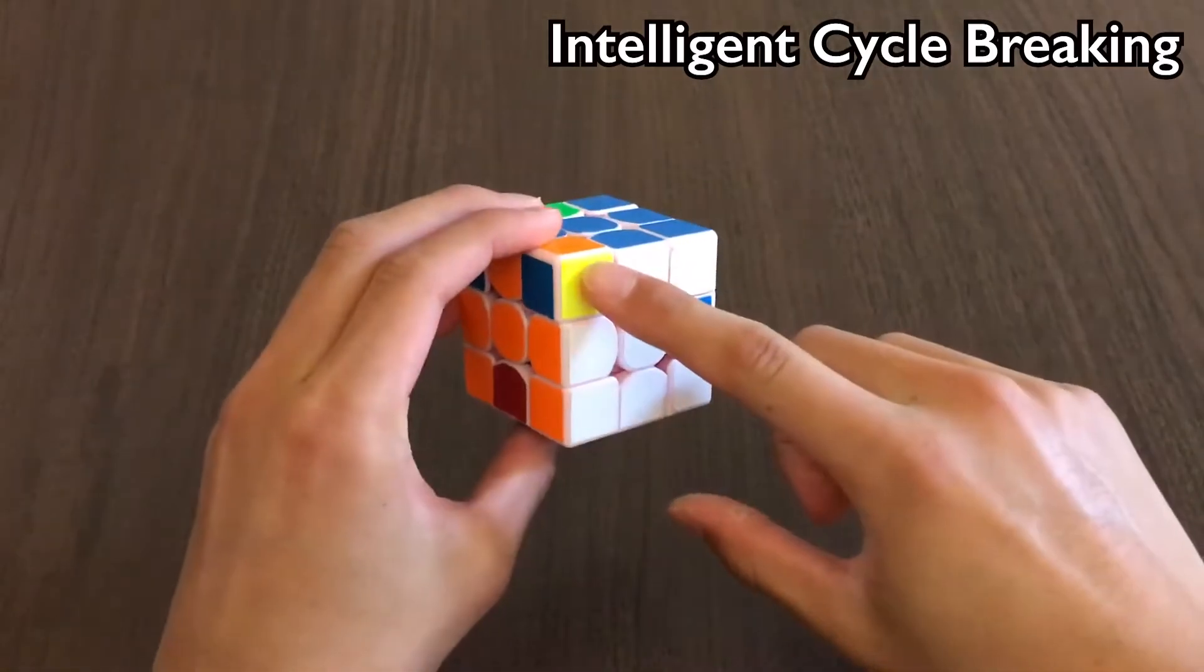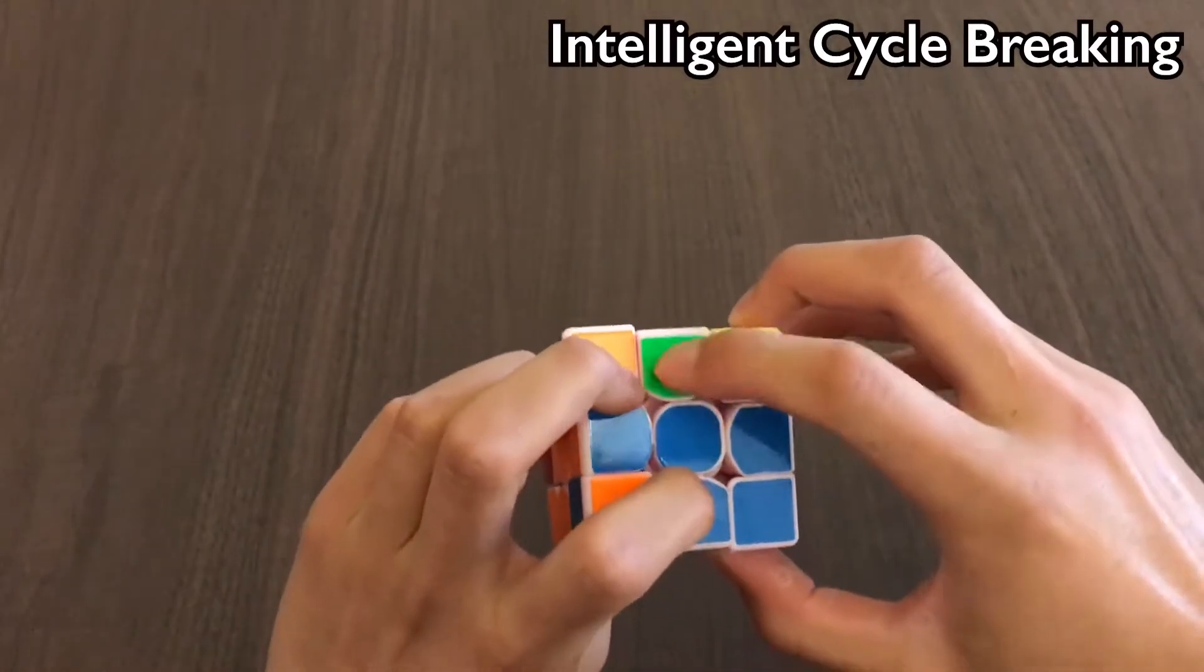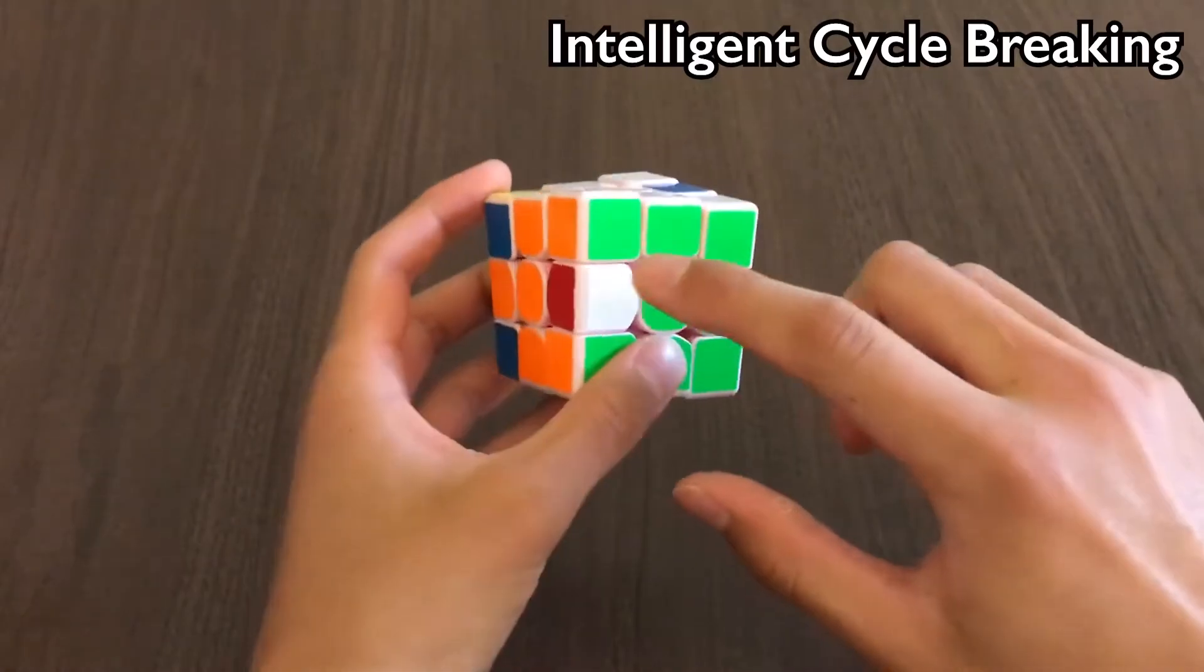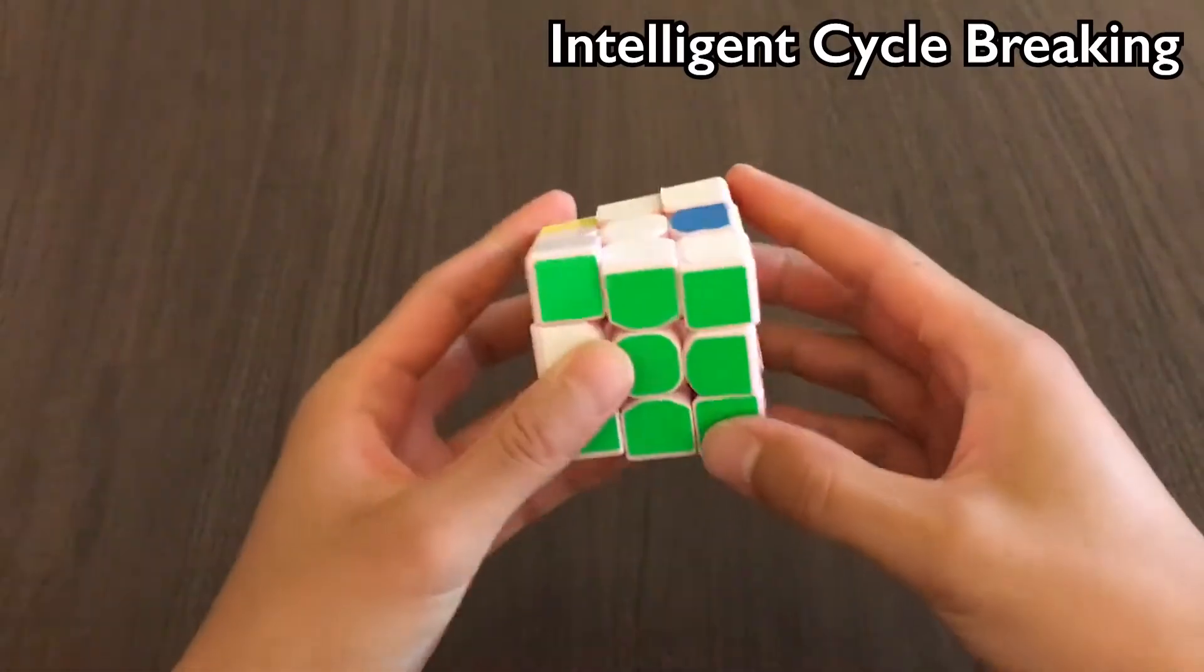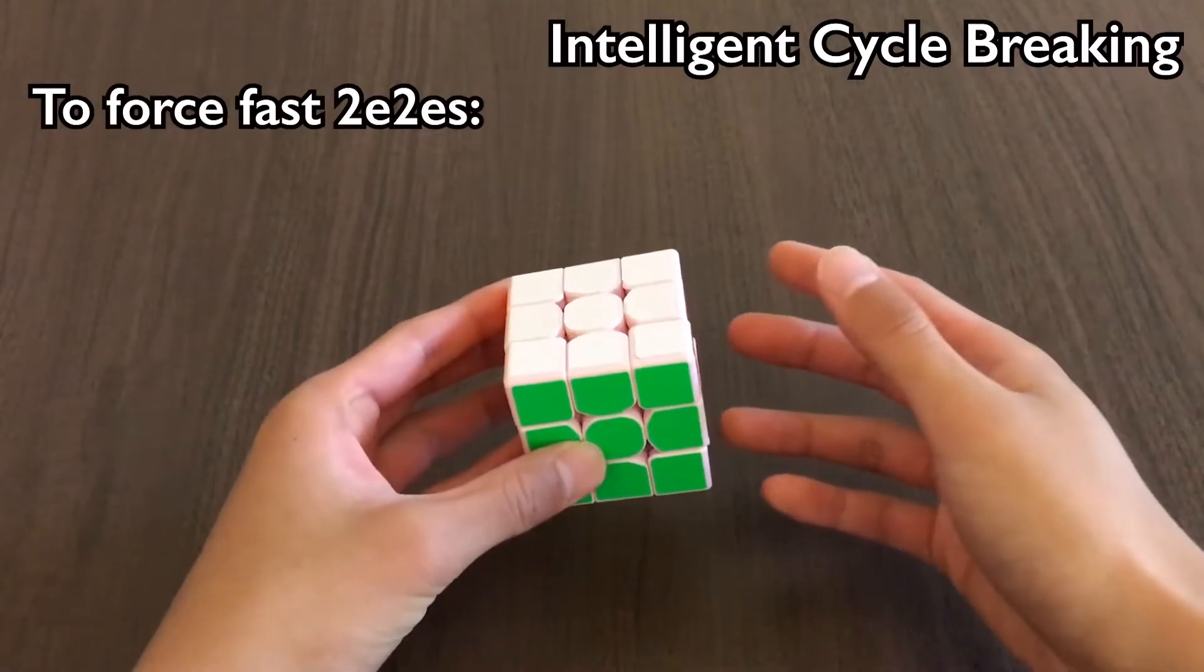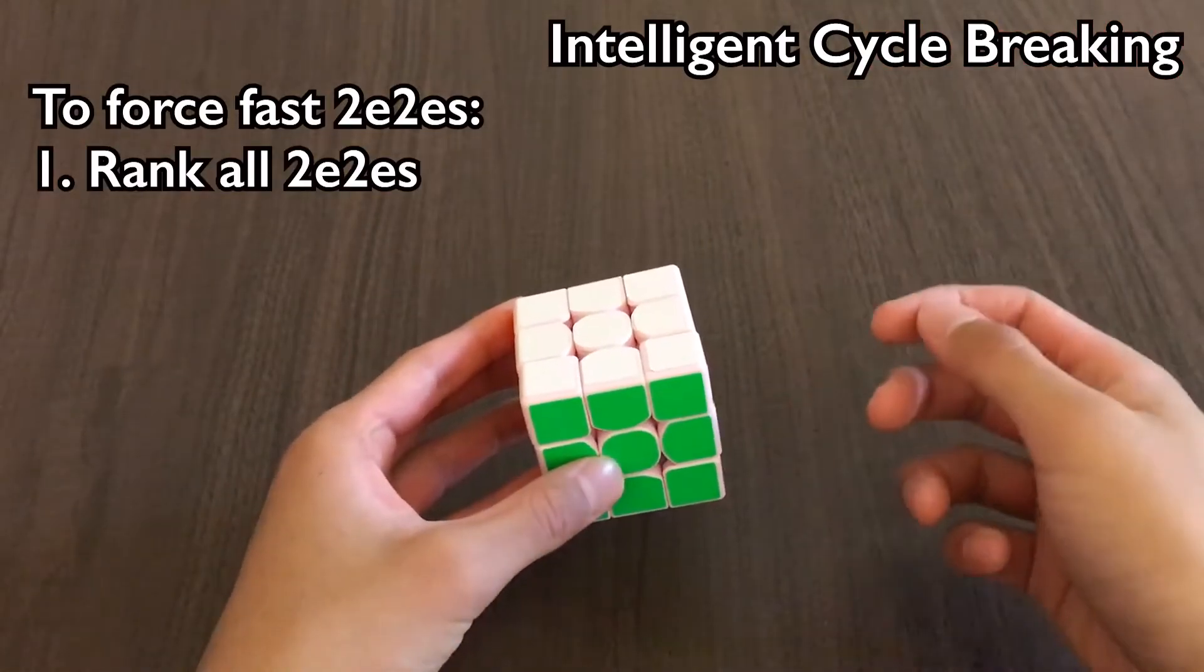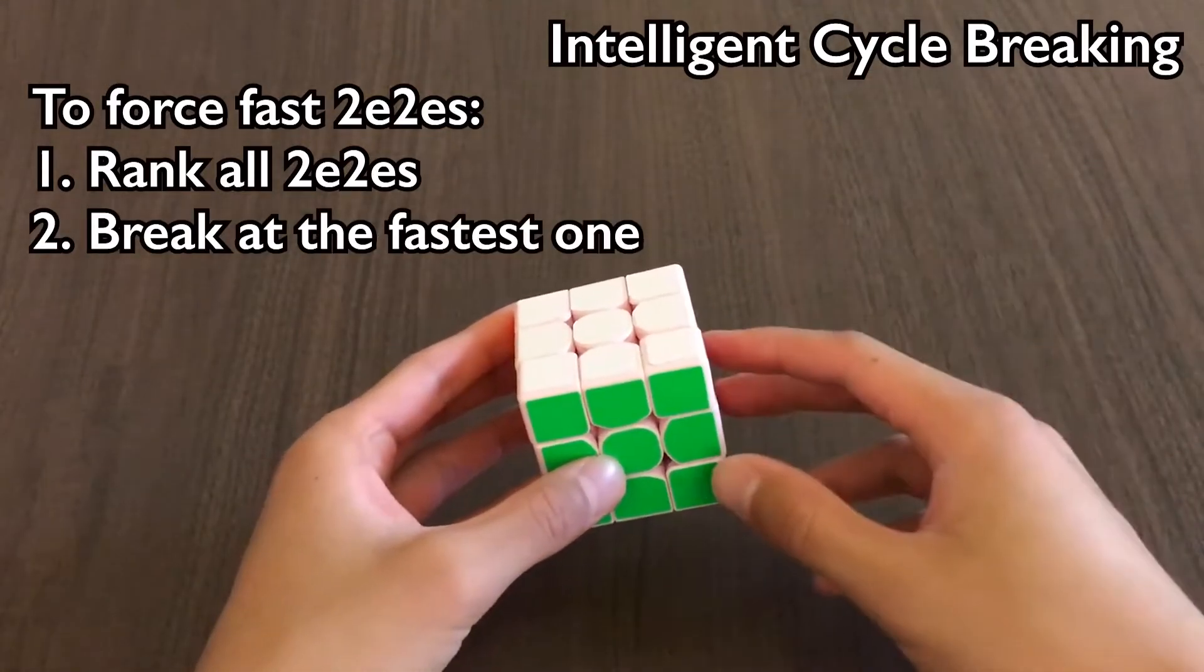In this case, we have parity, and our edge buffer is solved. Now, I like the 2E2E for BD, so I'm going to break there. That takes me to FR, and then FL, UR, and then back to BD. So as you can see, I cycle broke to BD, and I also ended on BD, which is a good 2E2E. To maximize your chances of getting a good 2E2E, you should rank all your 2E2Es in terms of speed, and then when you get a cycle break, go down the list and try to break at the first available sticker.